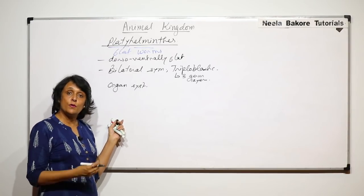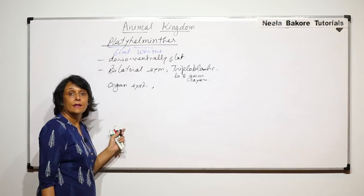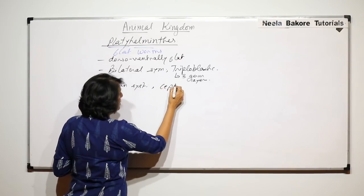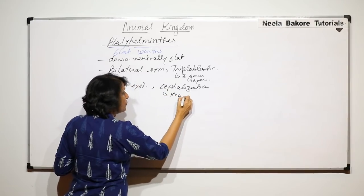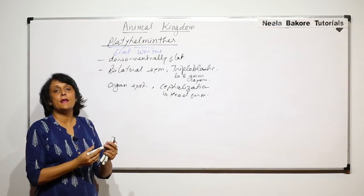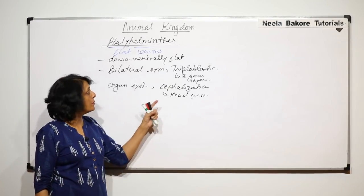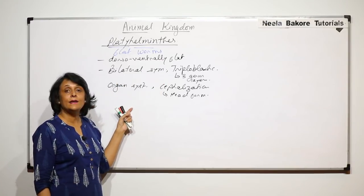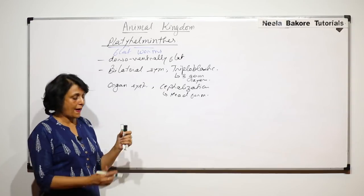They show bilateral symmetry for the first time. They are triploblastic, meaning the body develops from three germ layers: endo, meso, and ectoderm. They show organ system level of organization for the first time — before that it was only tissue level. And cephalization is also seen for the first time — cephalization means head formation, though this head is not very specialized since the brain or sophisticated structures are not yet formed.